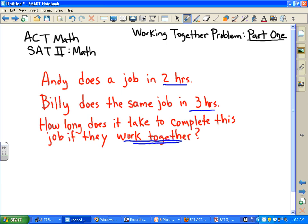Andy's rate: he can do the whole job in two hours, so in one hour he'll do half the job. Billy in three hours can do the whole job, so his rate is he could do one-third of the job in one hour. And that's one complete job, so if we add one-half plus one-third times x, that's equal to one.